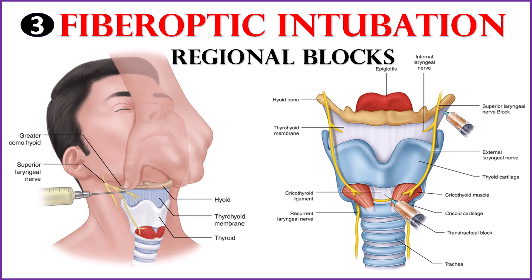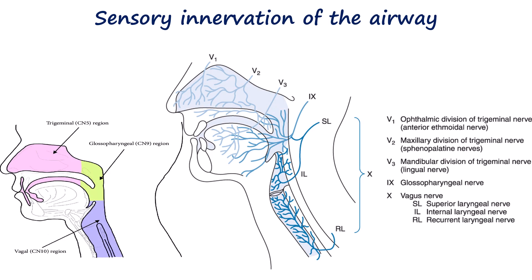Hello everyone and welcome back. In our last video, we looked at different methods of topicalizing the airway in preparation for fiber optic intubation. In this video, we'll go through the regional blocks that are used for numbing the airway. The same diagram here illustrates the sensory innervations of the airway, which we discussed in the first video.